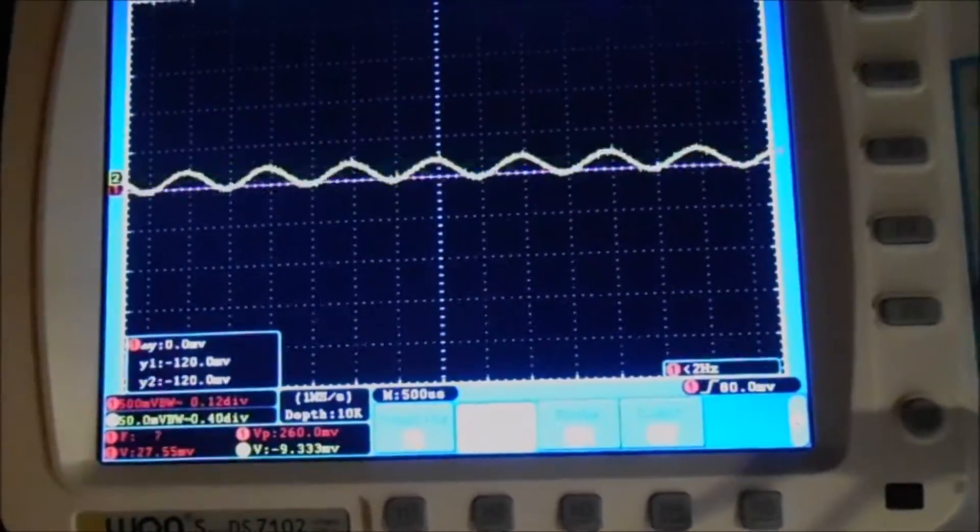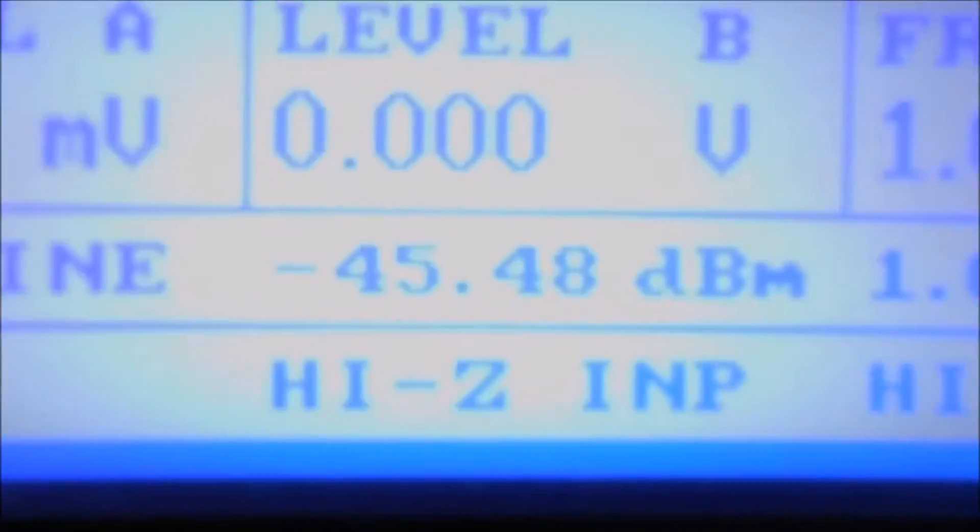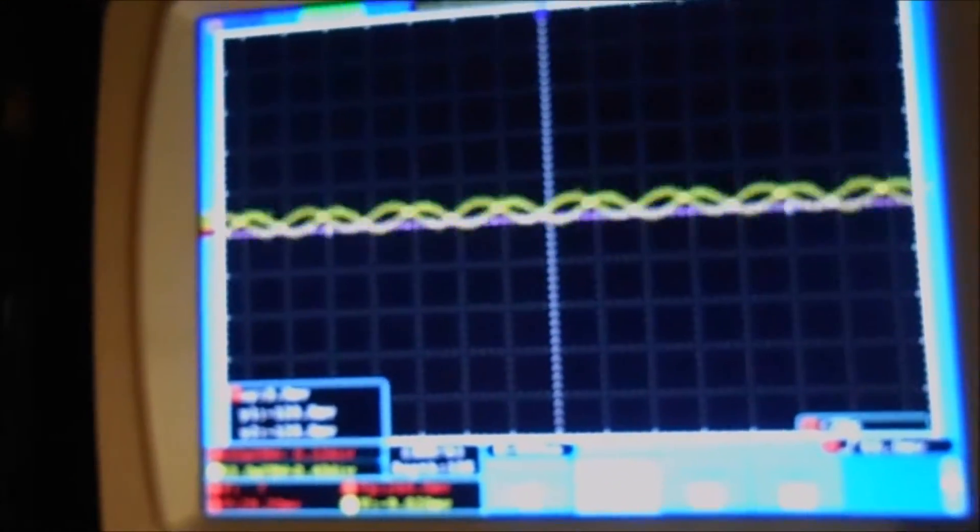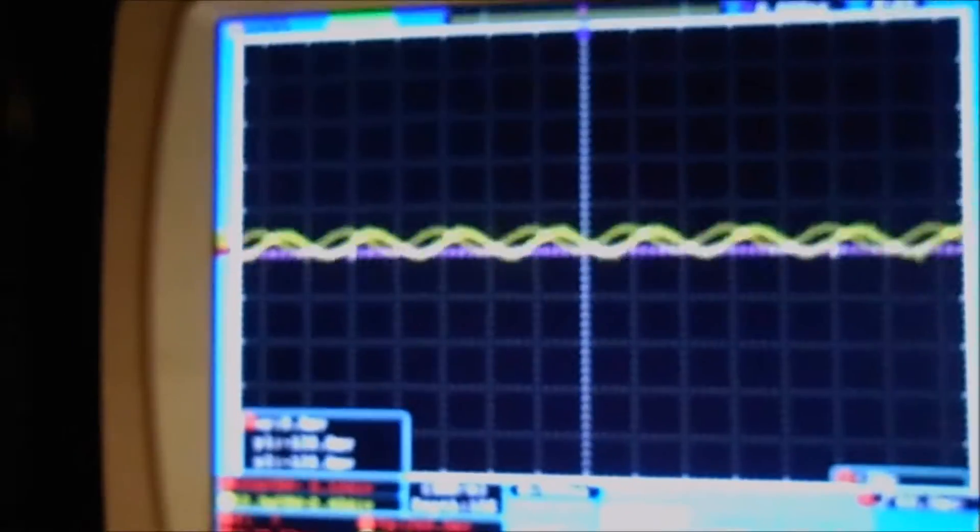Now it's minus 45 dBm, minus 45 dBm in bypass mode and we have this picture in the scope.